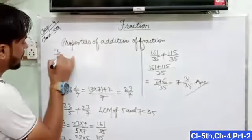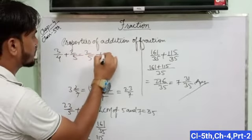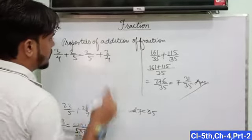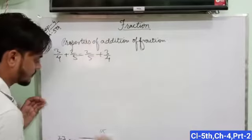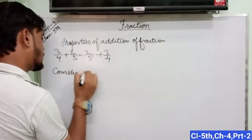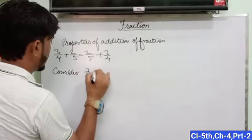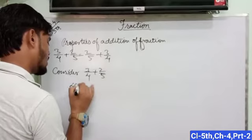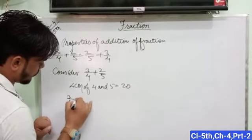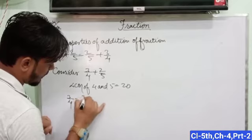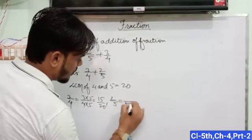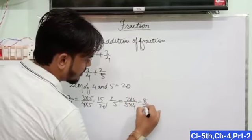The properties of addition of fraction: we can add any fraction in any order. We will show that 3 upon 4 plus 2 upon 5 is equal to 2 upon 5 plus 3 upon 4. Consider 3 upon 4 plus 2 upon 5. LCM of 4 and 5 is equal to 20. 3 upon 4 equals 15 upon 20, and 2 upon 5 equals 8 upon 20.